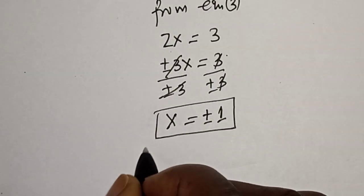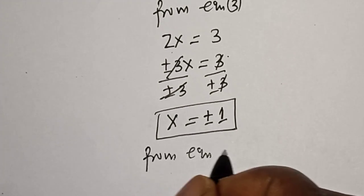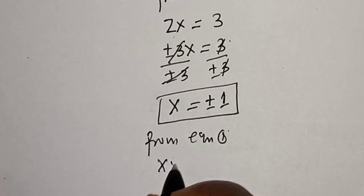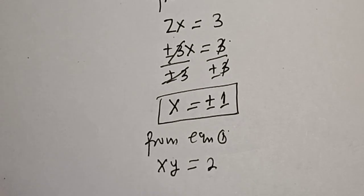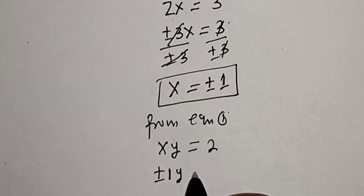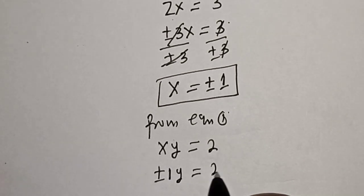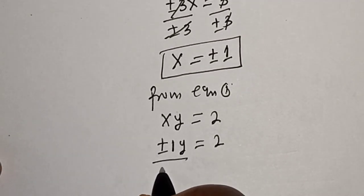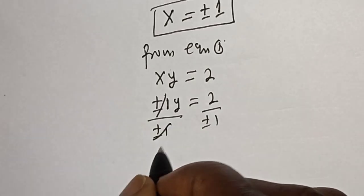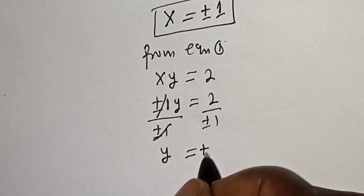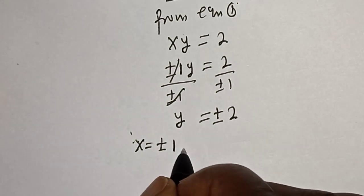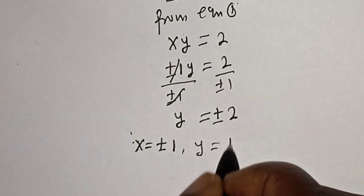From equation 1, xy is equal to 2. Since x is plus or minus 1, dividing both sides by plus or minus 1 gives y equal to plus or minus 2. So x is plus or minus 1, y is equal to plus or minus 2.